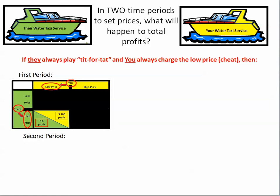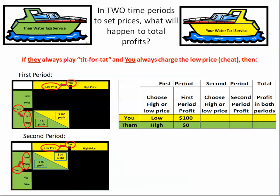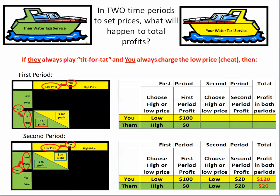Now reverse the situation — you're the cheater and they play tit-for-tat. You cheat by charging the low price in the first period while they go high, so you get $100 and they get nothing. In the second period, they do what you did last time and go low. You also go low. You both get $20. Your total is $100 + $20 = $120, and their total is $0 + $20 = $20. The same numbers, just for the opposite people.